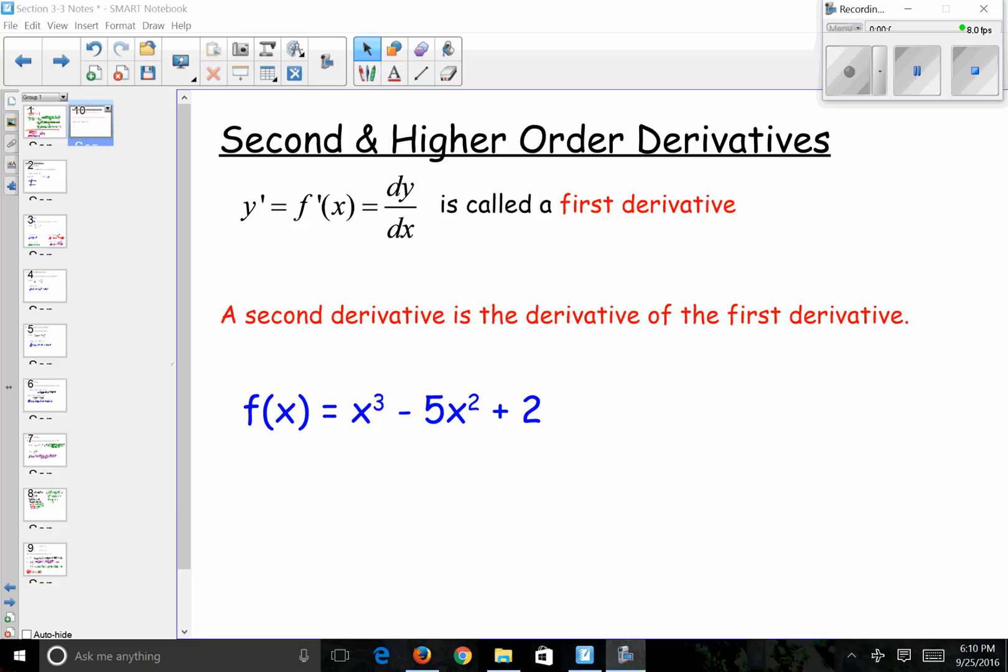So the derivatives that we've been finding are what are called first derivatives. The y prime, f prime of x using Newton's prime notation, or dy/dx using Leibniz notation. However, we do have second and third and fourth and other what are called higher order derivatives. So a second derivative is if I take the derivative of the first derivative. A third derivative would be if I took the derivative of the second derivative, and so on.